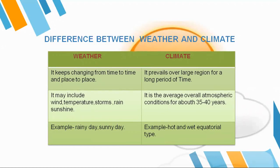Weather may include wind, temperature, storms, rains and sunshine. We get rain today, sunshine tomorrow, storms the other day — so it keeps on changing. Whereas climate is something which is static; it does not change at regular intervals and it remains there for 35 to 40 years. Example of weather: rainy day, sunny day. An example of climate is the climate type of different regions in the world — for example, the hot and wet equatorial type.